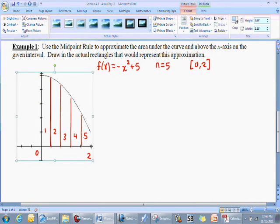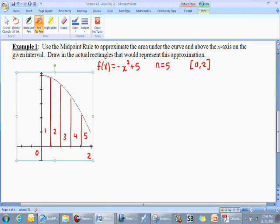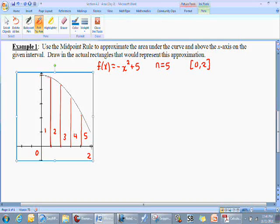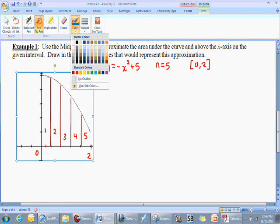Now as opposed to what we were doing before - setting up left side endpoints where I would move from the left side over to the right, or a right side endpoint which moves from the right side over to the left - I'm going to take exactly a point right in the middle. To emphasize this we can switch colors and show you what those would look like.